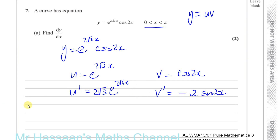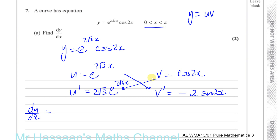Now when I use the product rule, I'm going to find dy/dx. I like to write down u and u dash on one side, v and v dash on the other. Then instead of memorising a formula, I just know I need to multiply u by v dash and add v multiplied by u dash.